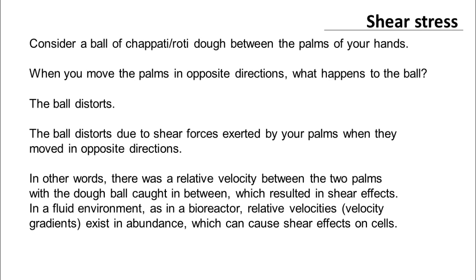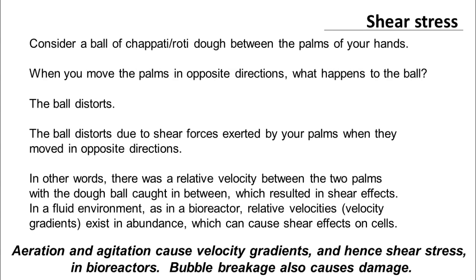As long as there are velocity gradients, there is going to be shear stress and cells are going to experience it. Shear stress is a given in a bioreactor's fluid environment where there are many velocity gradients. These velocity gradients arise because the fluid is moving due to the agitator or the aeration being employed. Aeration also displaces the fluid and causes velocity gradients, therefore it can cause shear stress. So aeration and agitation cause velocity gradients and hence shear stress in bioreactors.